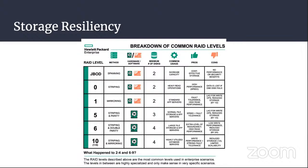RAID 5 requires a minimum of three drives, but usually works with five. 33% is taken from every single disk — that will be the parity spread across all five drives. Should one of the drives die, all four are still able to continue; you replace the drive and life moves on. RAID 6 means that two-fifths is taken and if two drives die, life continues.